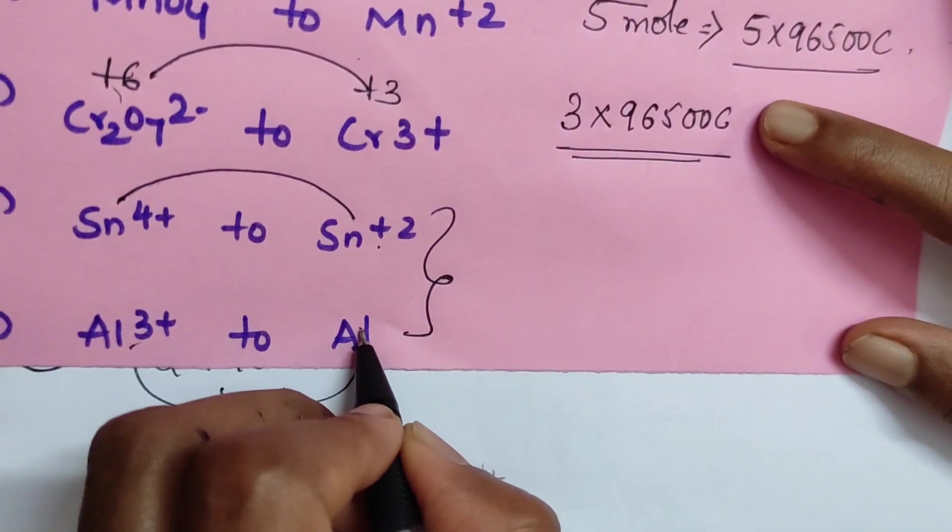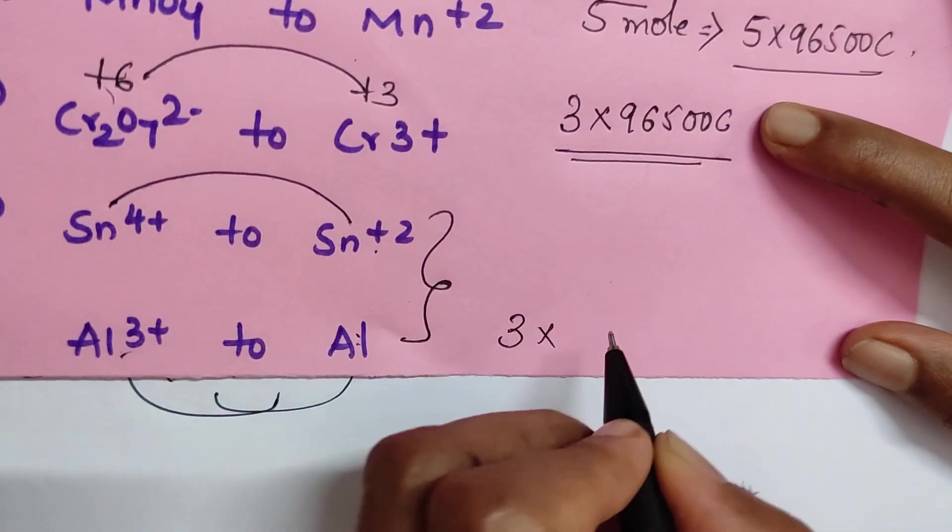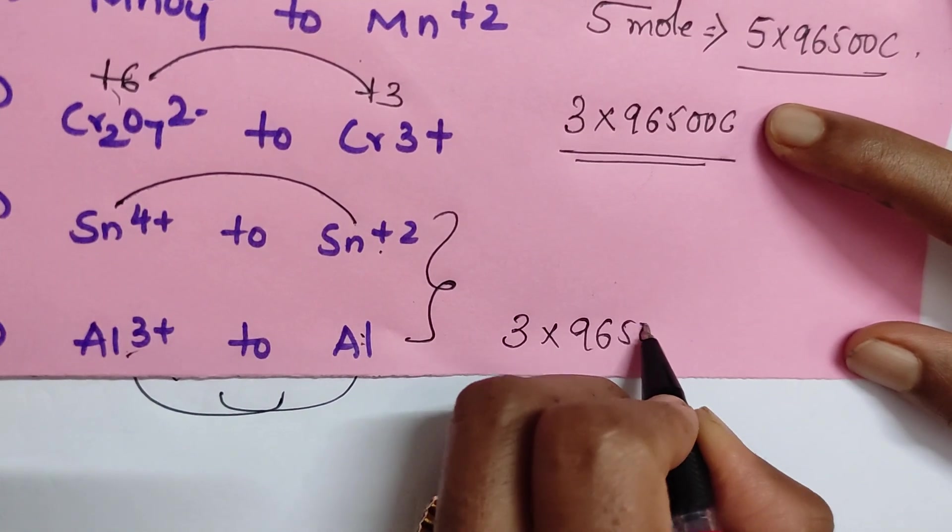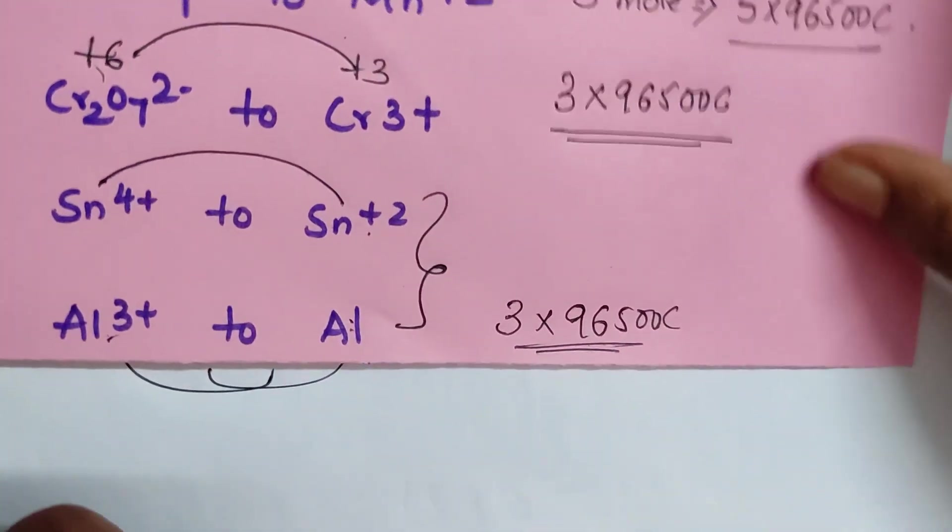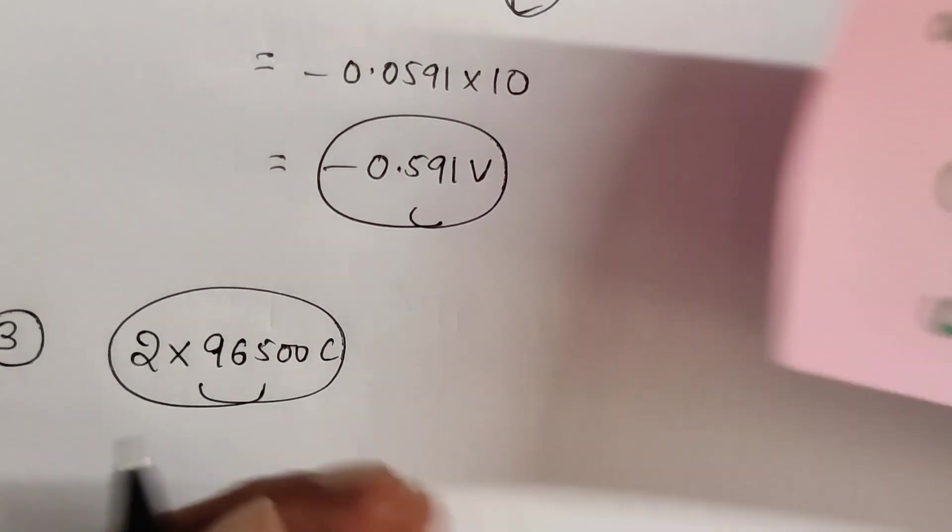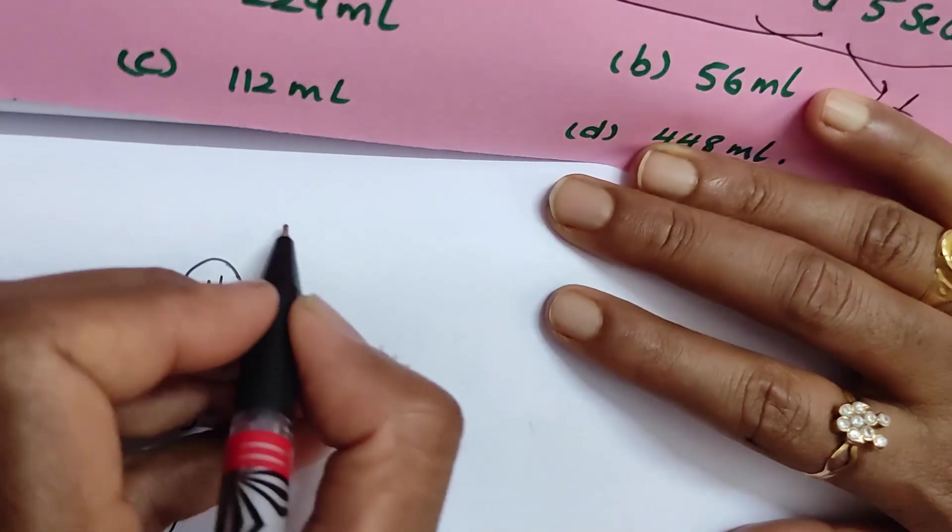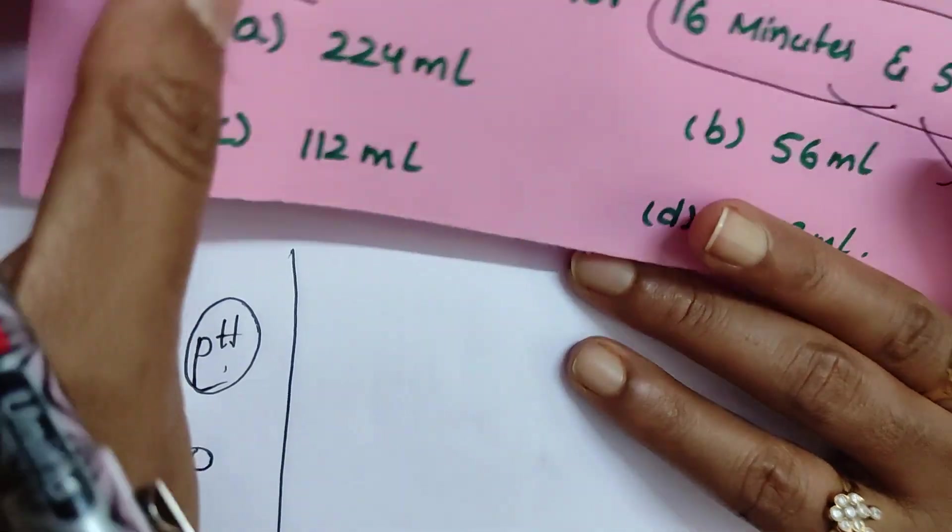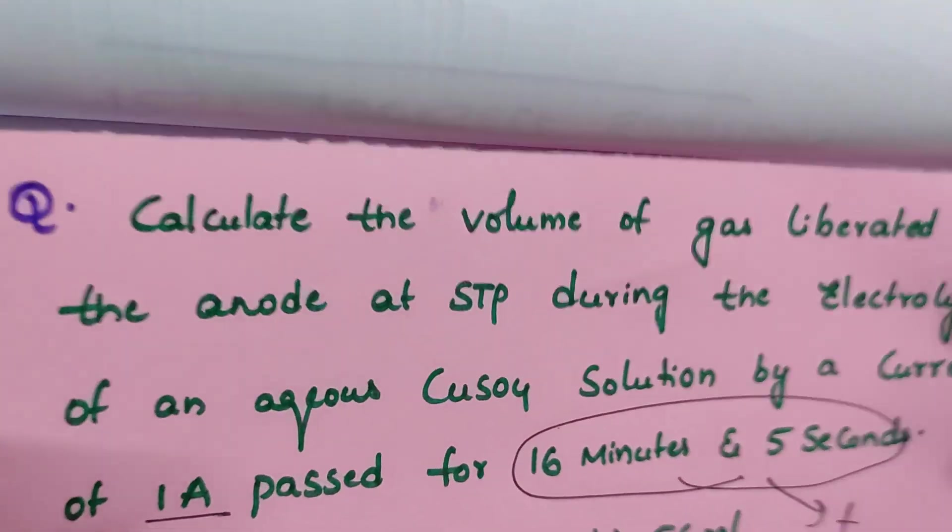For Al³⁺ to Al, three moles is the change. 3 times 96,500 coulombs is the correct answer. In case of trick number four, I taught you the question regarding Faraday's law, Faraday's first law.